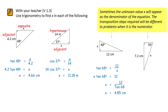The last question is similar. We ask ourselves which sides are involved — it's the opposite and the hypotenuse, making it a sine question. We can say that the sine of 70 equals opposite 7.2 over x. We need to make x the subject, so multiply both sides by x to get x times sine of 70 equals 7.2. Then divide both sides by sine of 70, giving x equal to 7.66 cm.